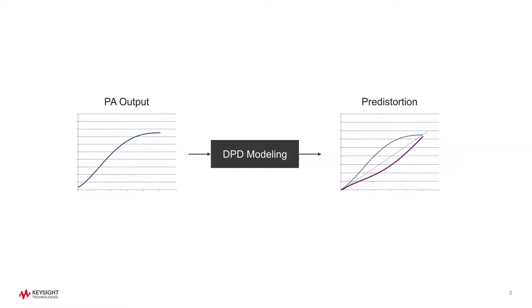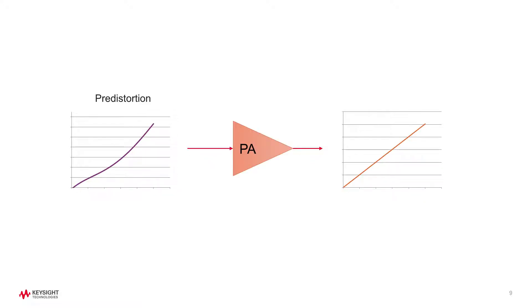If we have knowledge of the nonlinear characteristics of PA, we can increase input power level before it goes into PA to compensate gain compression. As a result, the PA output is linear again, at least in theory. This is the very basic concept of pre-distortion. When this power pre-adjustment is done digitally in baseband, this is called digital pre-distortion or DPD.